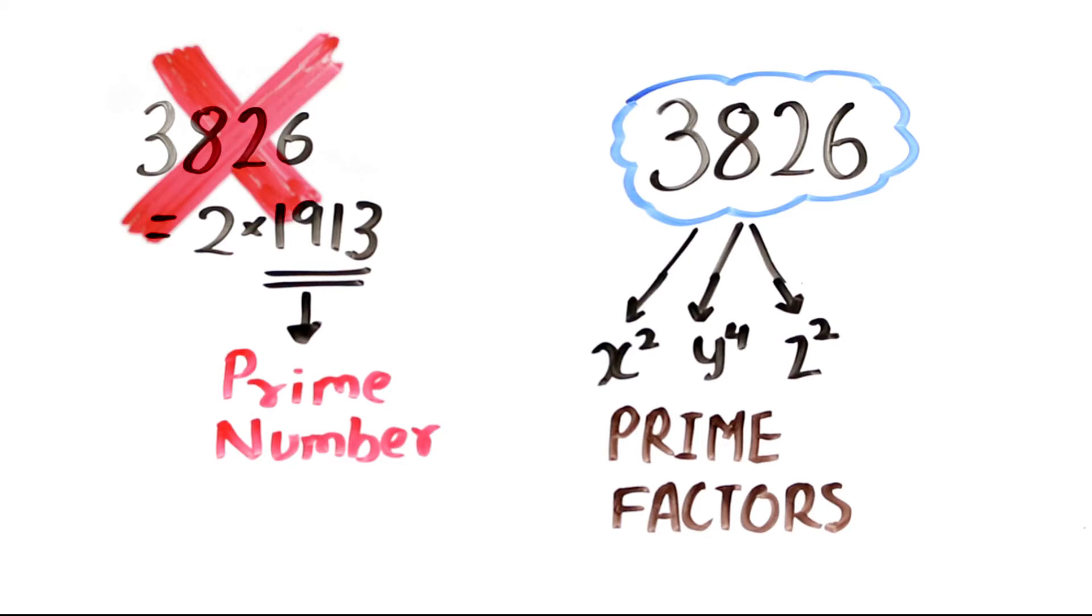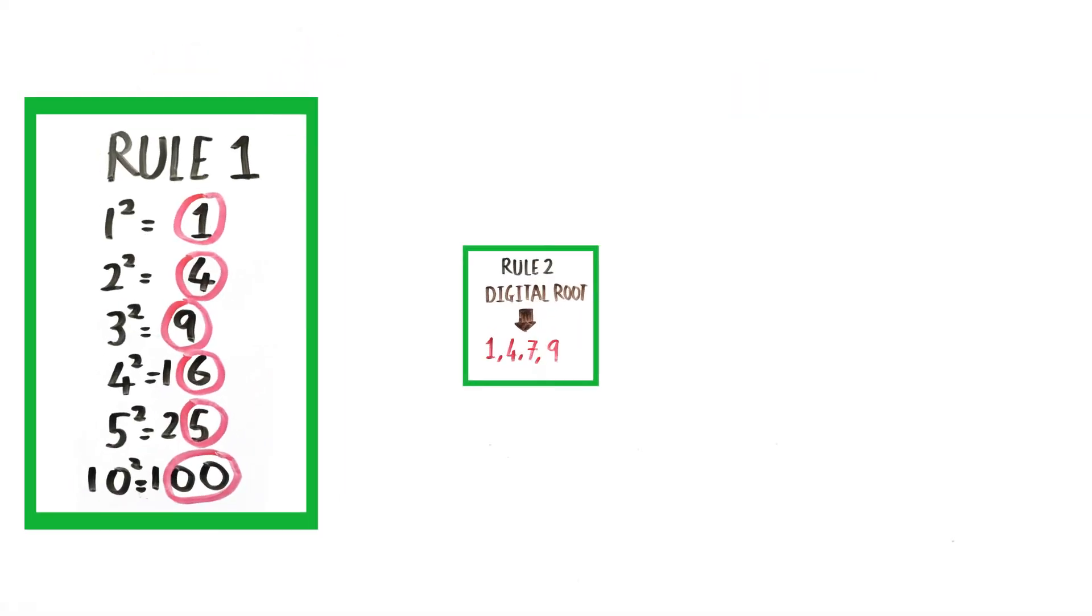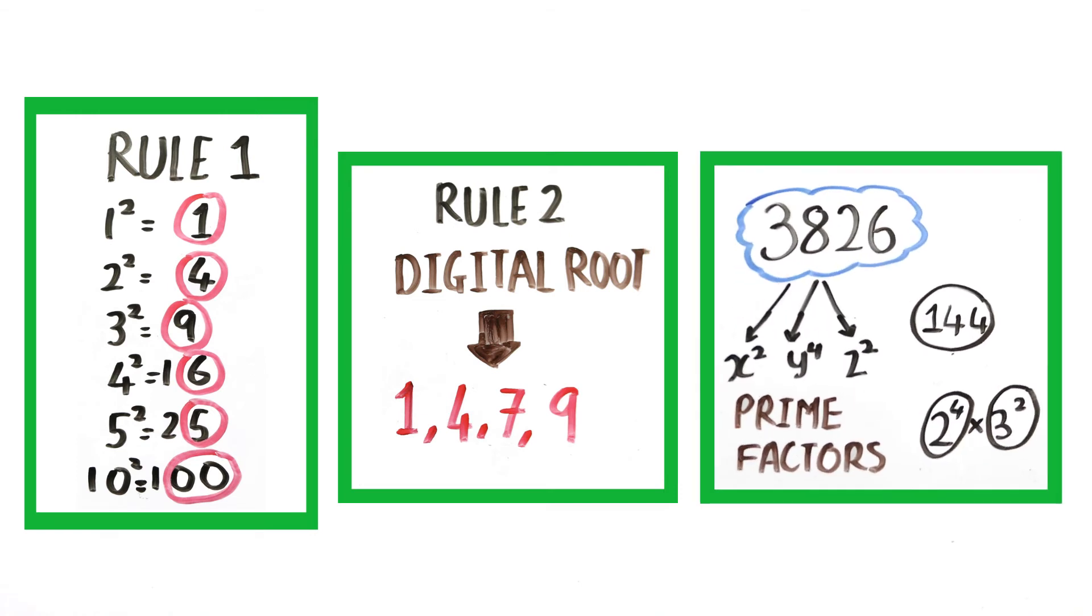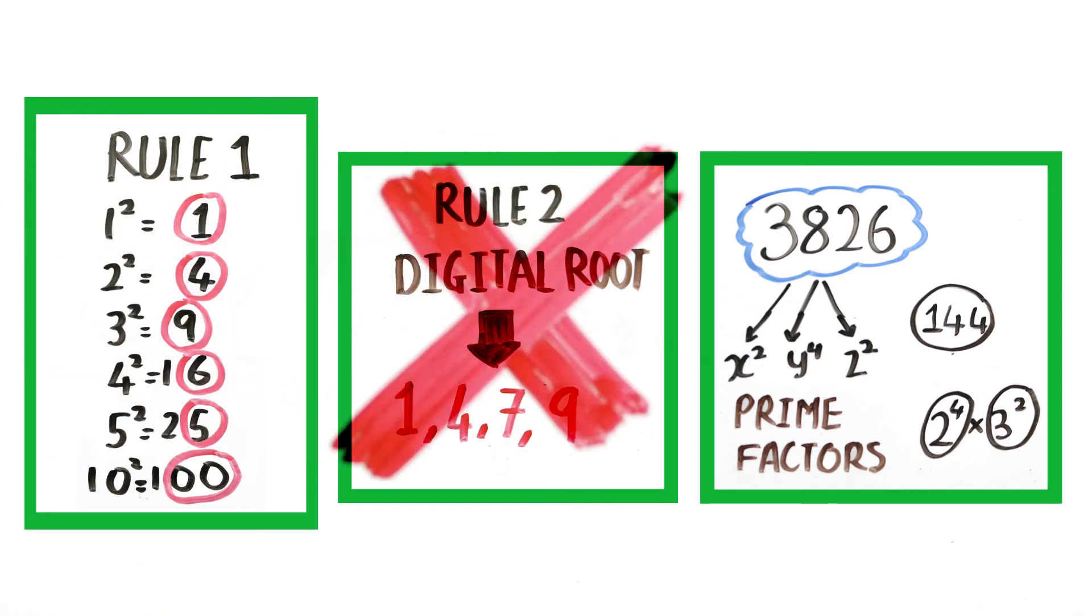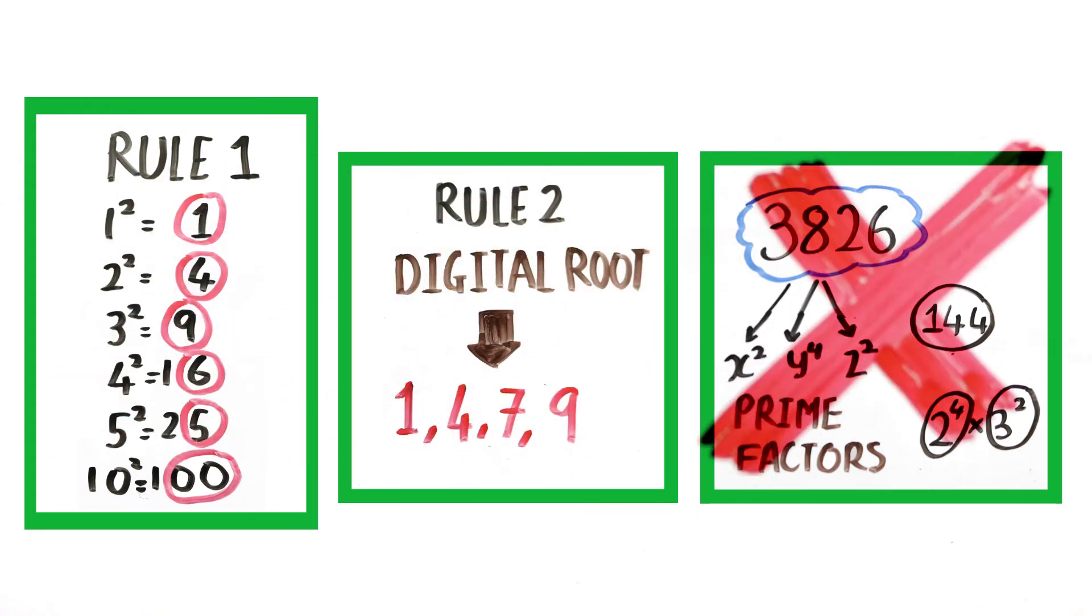If you have observed carefully, if a number is actually a perfect square, you have to test it with all these 3 steps. If it is not a perfect square, then one of the tests will fail. The moment a test fails in any of the 3 steps, you can conclude that it's not a perfect square, and you don't need to solve further.